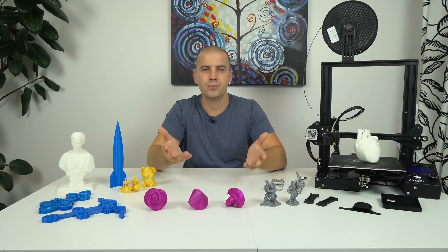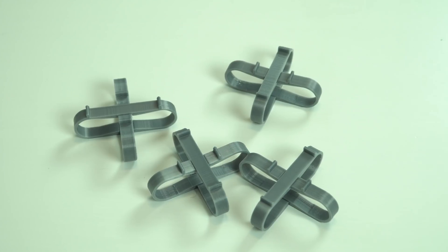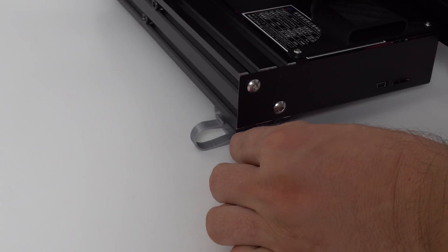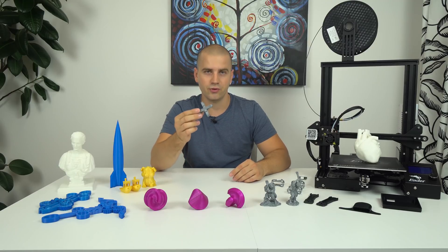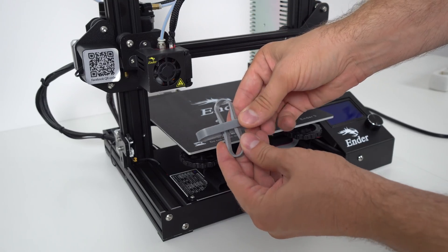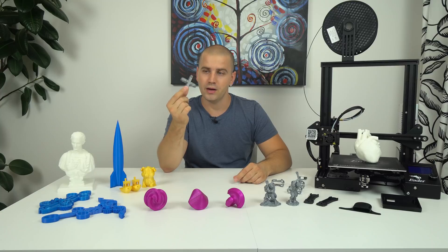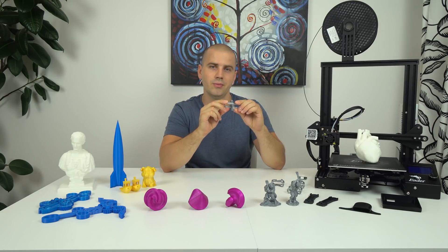What you can do is simply print these vibration dampers in PLA and place them under the corners. These dampers are made for Ender 3 and they are working very good. Just remember to print them in 100% infill and they will be pretty stiff and stable.